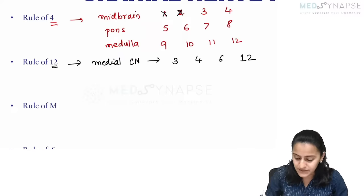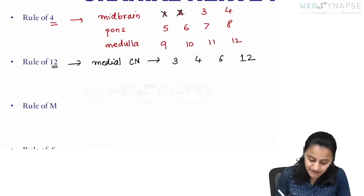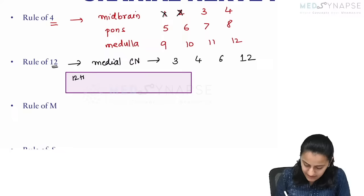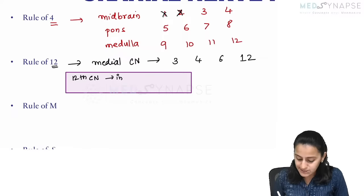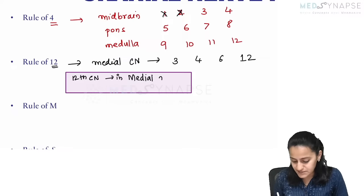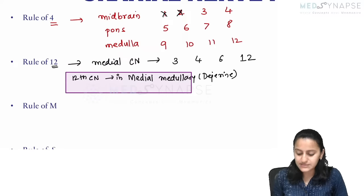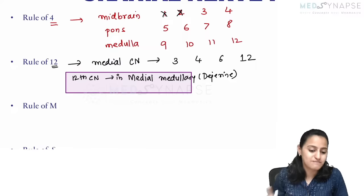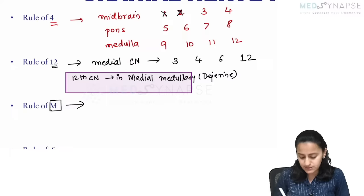Cranial nerves three, four, six, and twelve arise from the medial aspect of the brainstem; the rest arise laterally. So if I ask you: the 12th cranial nerve will be affected in which brainstem syndrome — medial pontine, lateral pontine, medial medullary, or lateral medullary? Because of the rule of 12, twelve is medial, and the last four cranial nerves are medulla. So it is affected in the medial medullary syndrome, called the Dejerine syndrome. The lateral medullary (Wallenberg) syndrome will spare the 12th cranial nerve.